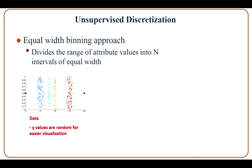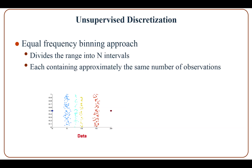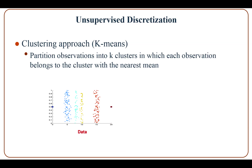In unsupervised discretization, class labels are not used. The equal-width binning approach divides the range of attribute values into intervals of the same width — for example, there are four equal intervals. Another approach is equal-frequency binning, which divides the range into m intervals where each interval contains approximately the same number of observations. Another approach is k-means clustering, which partitions observations into k clusters in which each observation belongs to the cluster with the nearest mean.